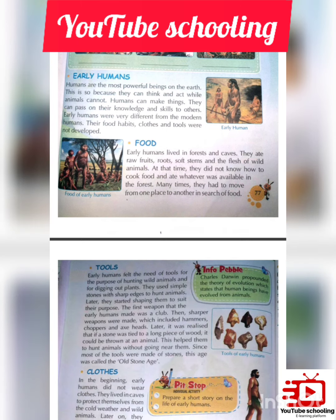Number one: Early Humans. Humans are the most powerful beings on the earth. This is so because they can think and act, while animals cannot. Human beings have a thinking ability, while animals do not.